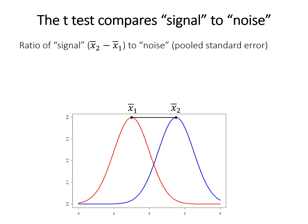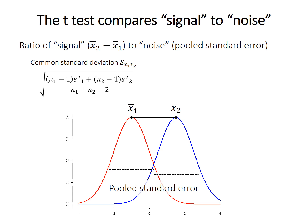It's probably not surprising that the t-test basically compares signal to noise. The signal is the difference between sample means — the greater the difference, the more likely it is that they came from different populations. The noise is something called the pooled standard error. It's called pooled because it's a single value that incorporates the standard error of both samples. You calculate the common standard deviation by weighting each sample's variance by its sample size, or technically n minus 1. Standard error is standard deviation divided by the square root of sample size, but here you divide the common standard deviation by the square root of the two sample sizes together.